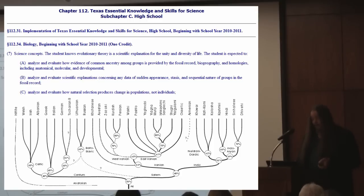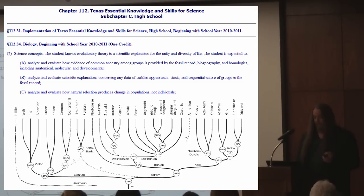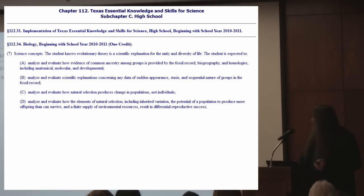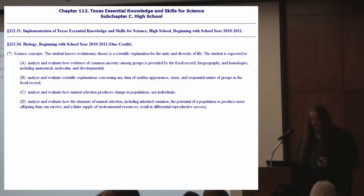Now analyzing the elements of natural selection, including inherited variation, the potential of a population to produce more offspring than can survive, and a finite supply of environmental resources resulting in differential reproductive success.